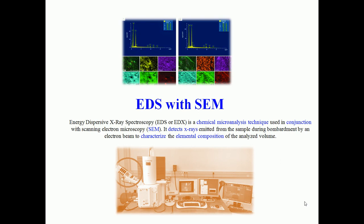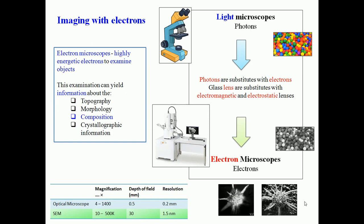EDS is also called energy dispersive X-ray spectroscopy because there is also wavelength dispersive X-ray spectroscopy. Both techniques are commonly called dispersive X-ray spectroscopy. This is one of the chemical microanalysis techniques where we detect X-rays emitted from the sample due to illumination by electrons, and analyze them for elemental composition analysis.